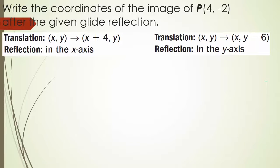Checkpoint problems 1 and 2 are yours. For each, write the coordinates of the image of P located at (4, -2) after the given glide reflection. Problem 1: do a translation of (X+4, Y) and then a reflection in the Y-axis. Problem 2: do a translation of (X, Y-6) and then a reflection in the Y-axis.